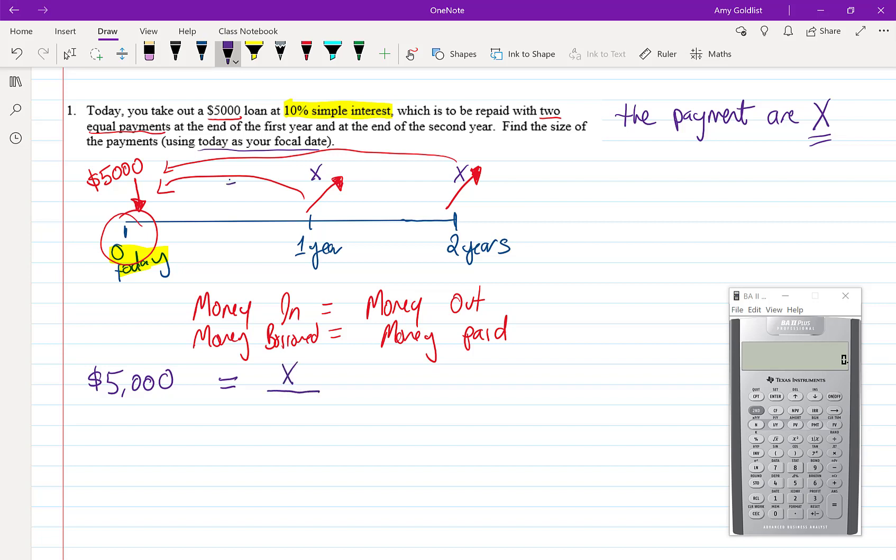That's moving backwards and we know that then we're dividing. We're finding a present value and that is X over 1 plus 10% simple times 1. And then we're gonna take the present value of this guy. Again we're moving backwards so that second payment of X is 1 plus 10% times 2.